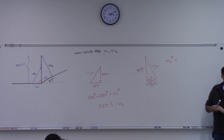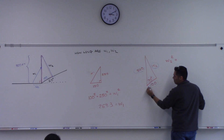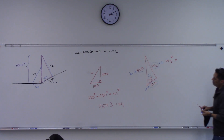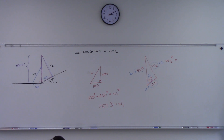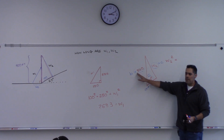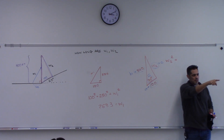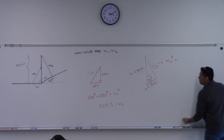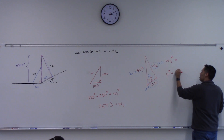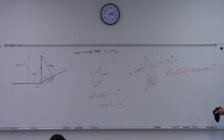It should be this squared plus this squared minus two times this times this times cosine of that angle. Let's label them: call this A, call this one B, call this little c, call that capital C. So I'm solving for little c.